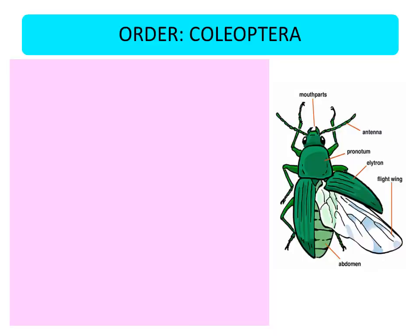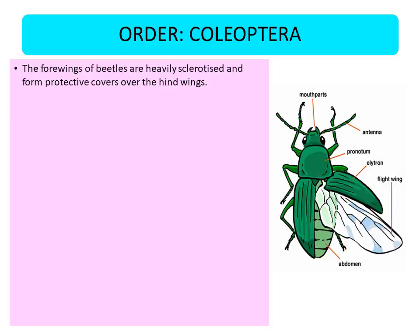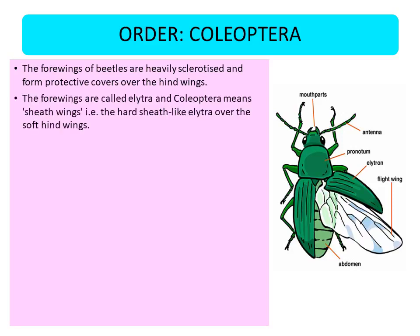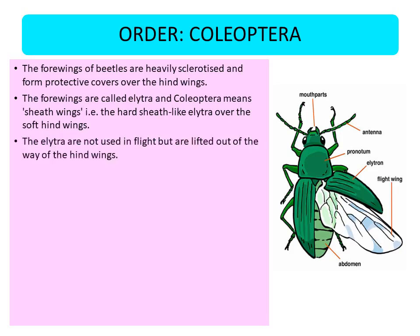Now coming to a few orders we are going to study. First is order Coleoptera. Coleoptera is a very important order where the beetles are present. In the case of Coleoptera, the forewings of the beetles are heavily sclerotized and form a protective covering over the hind wings. The forewings are known as elytra, and Coleoptera means sheath wings — that is the hard sheath-like elytra over the soft hind wings. The forewings are hardened to form the elytra, whereas the hind wings are soft.